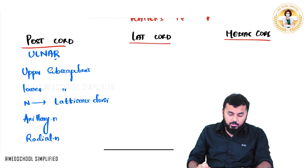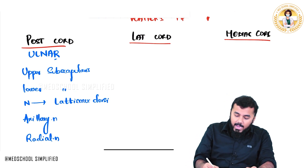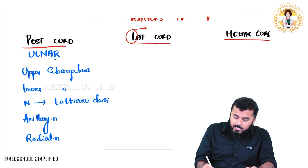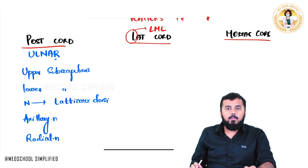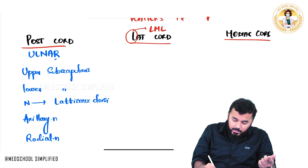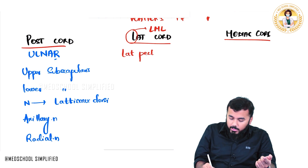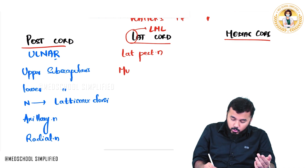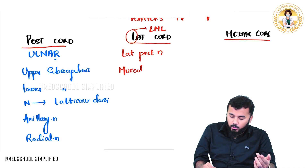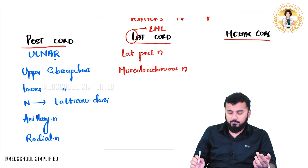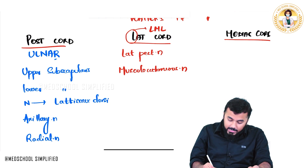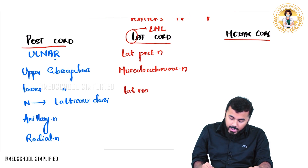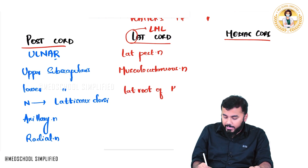For the lateral cord, remember LML: L = lateral pectoral nerve, M = musculocutaneous nerve, and the second L = lateral root of the median nerve.